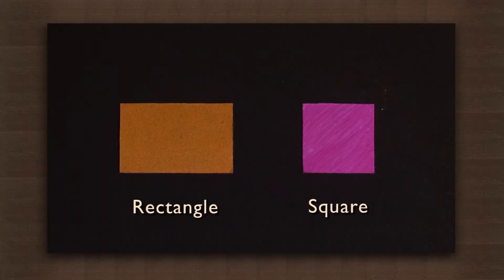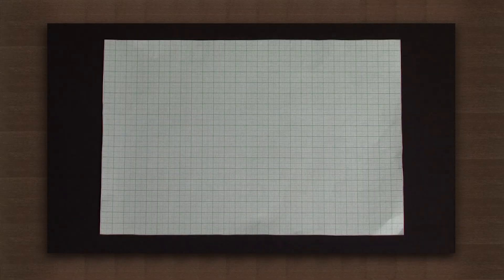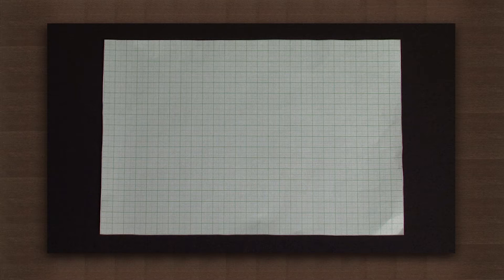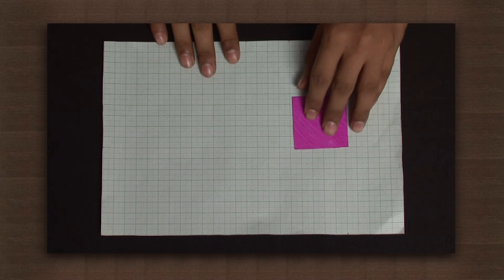We will see how to measure the area of two quadrilaterals. We have two pieces of paper cut in a square and rectangle shape and a graph paper with a scale of 1 cm. Place the square on the graph paper and draw its outline.